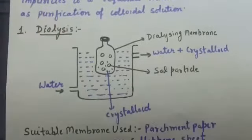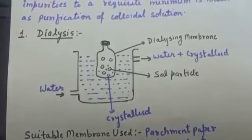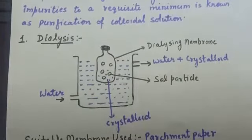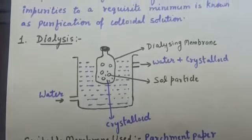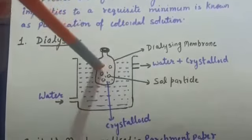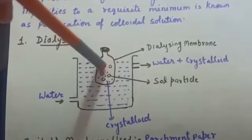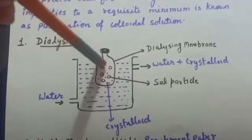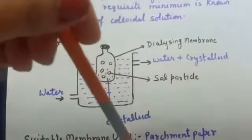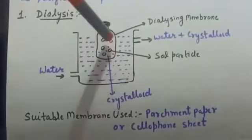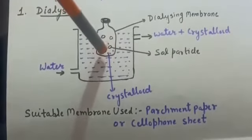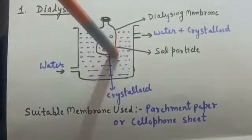The first purification method is dialysis. Dialysis is the process of removing dissolved substances from a colloidal solution by diffusion through a suitable membrane. The colloidal solution along with soluble impurities and electrolyte is taken in a bag whose walls are made of a dialysis membrane — parchment paper or a cellophane sheet. This membrane does not allow colloidal particles to pass through, whereas soluble impurities and electrolyte ions can pass through it.